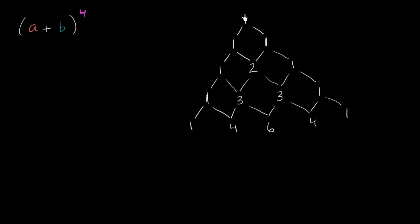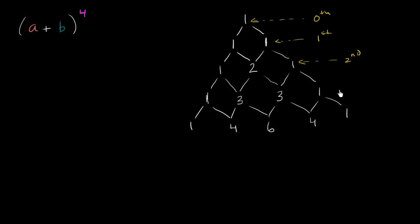These are the coefficients when expanding a binomial to different powers. The first row is the zeroth power, then the first power with coefficients one and one, the second power giving a squared plus two ab plus b squared, the third power with coefficients one, three, three, one, and the fourth power with coefficients one, four, six, four, one. So the coefficients I'm claiming are going to be one, four, six, four, and one.